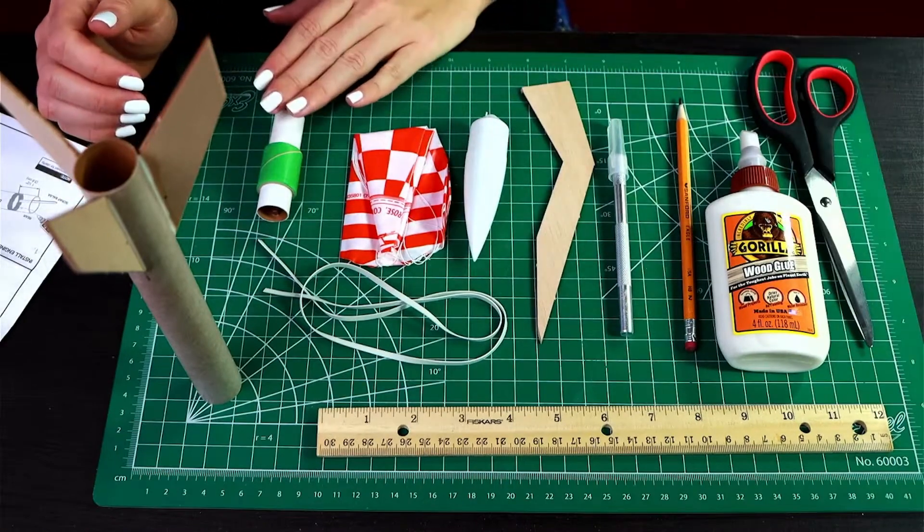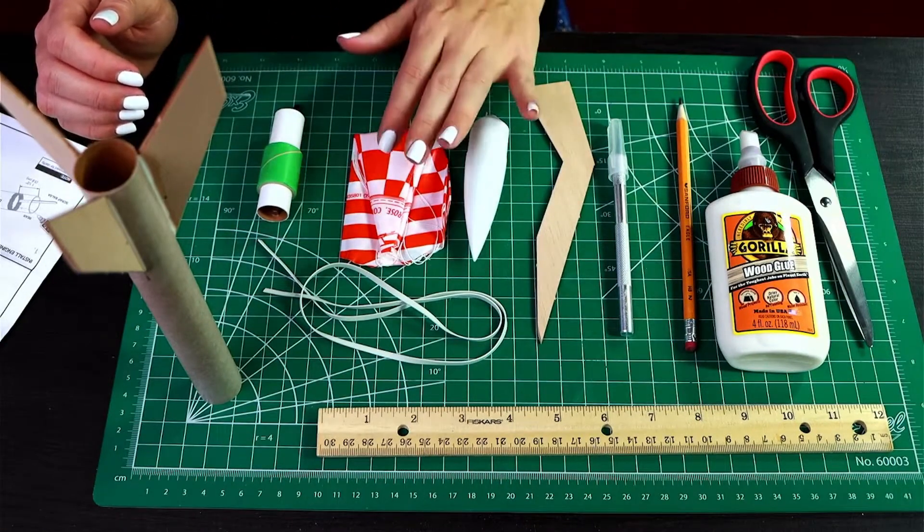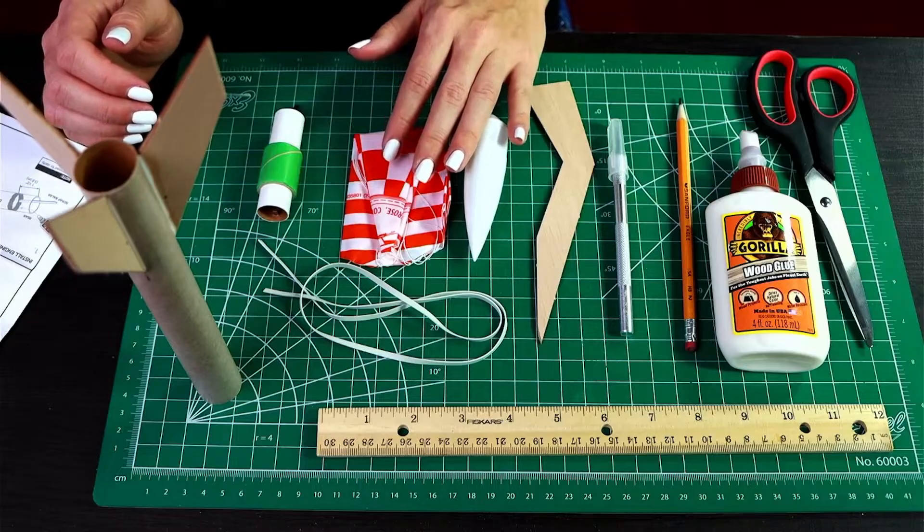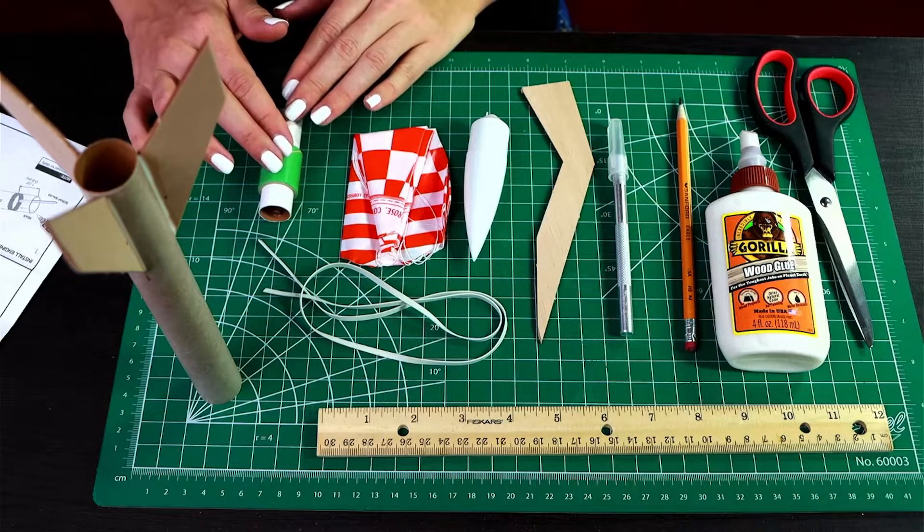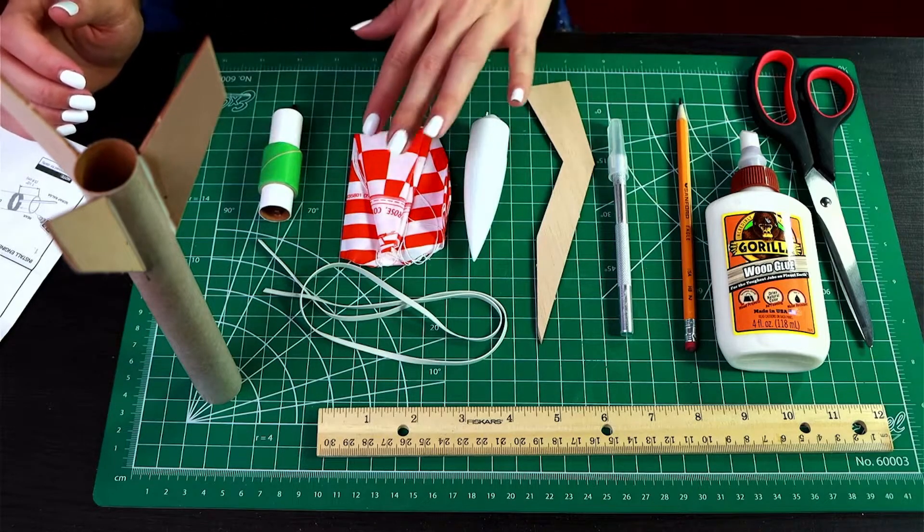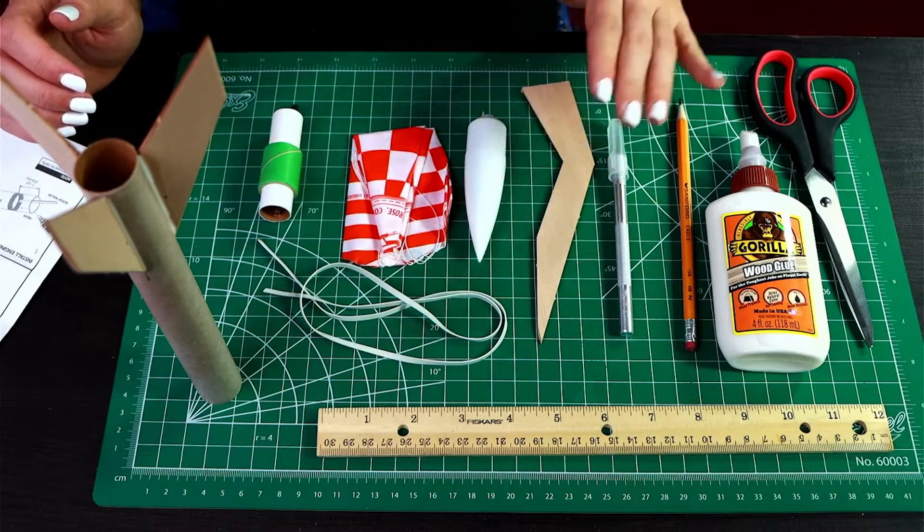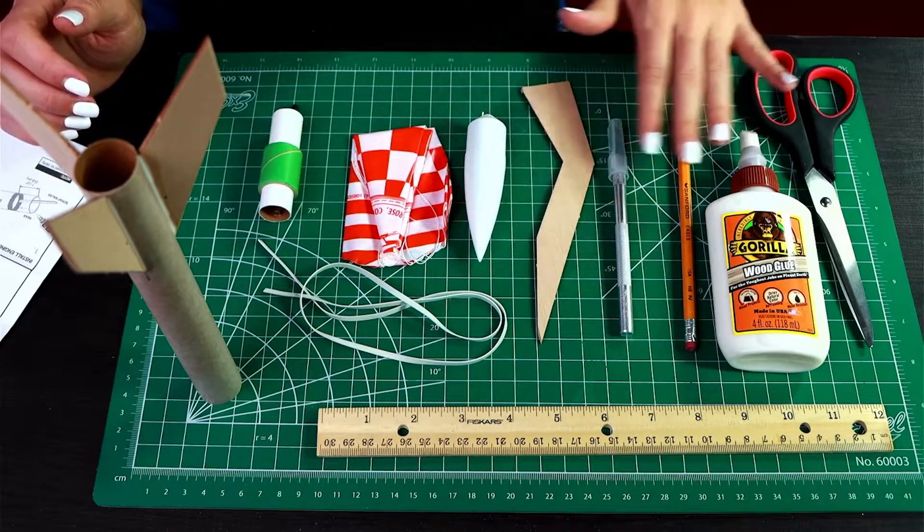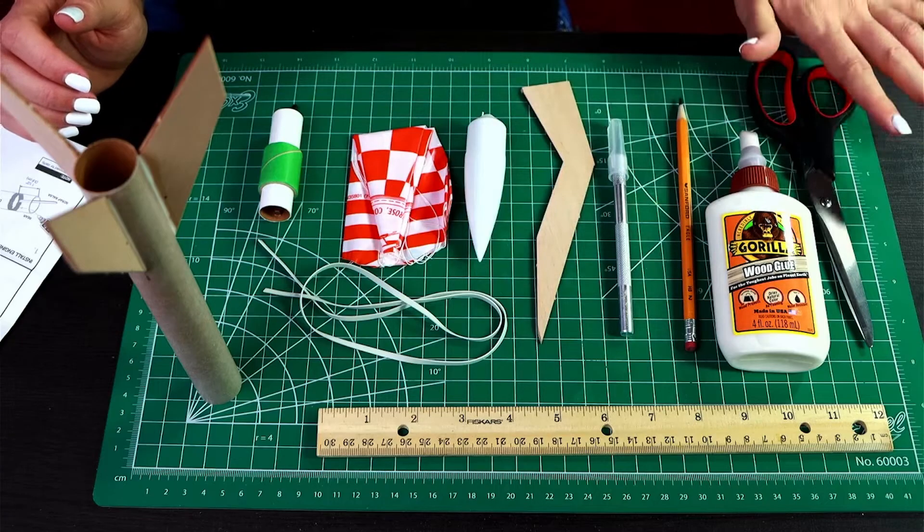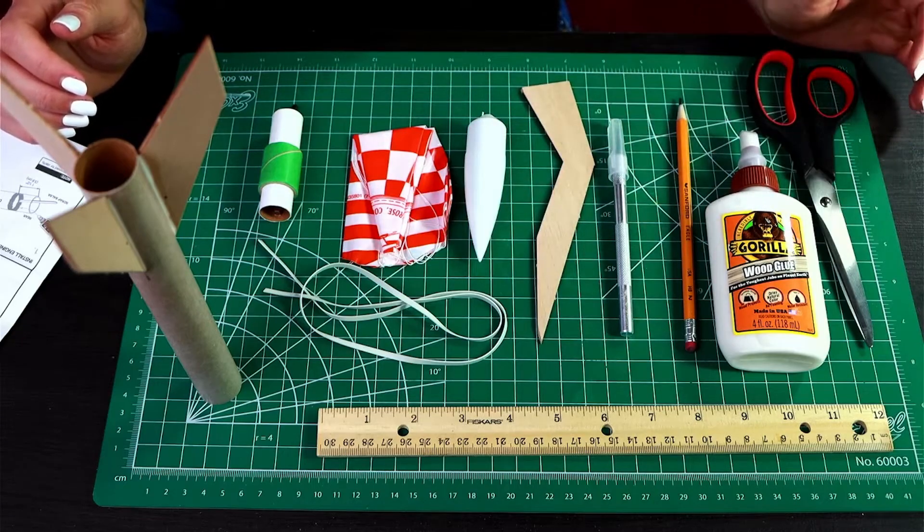Okay, next up we are going to install the engine mount and then install and prepare the recovery system. So I've got my assembled engine mount from part one, our parachute, shock cord, nose cone, some scrap balsa wood, as well as our other materials: the ruler, hobby knife, pencil, glue, and scissors.